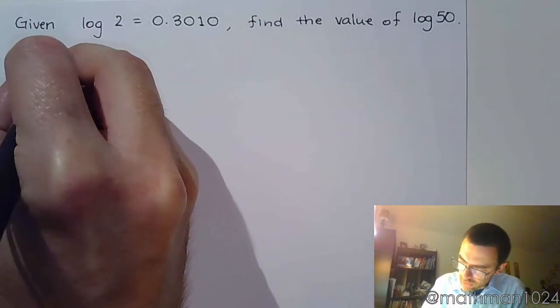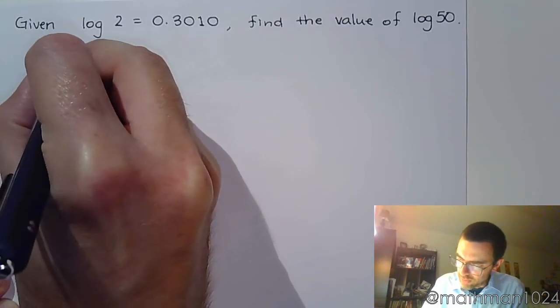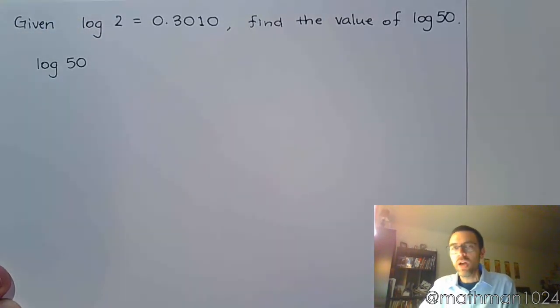If I look at log of 50, unfortunately I can't write this using just factors of 2. Like the other example, we had a natural log of 48 and I was able to break that down completely using 2 and 3. I can't break this down just using 2. Here's what we need to do. It's kind of tricky, right?